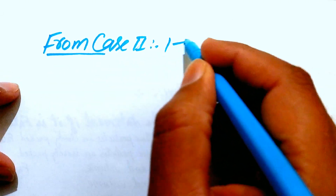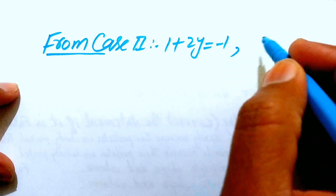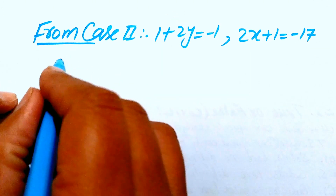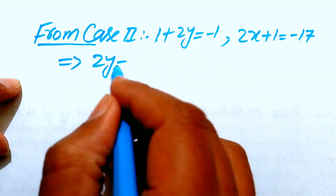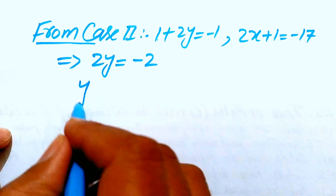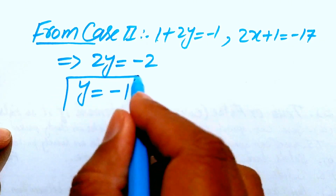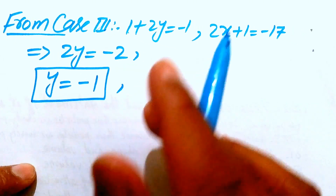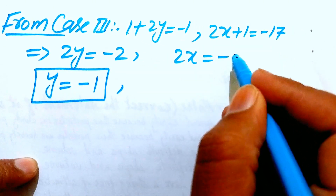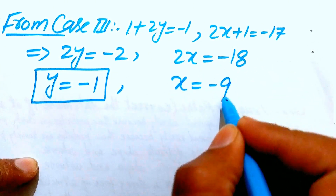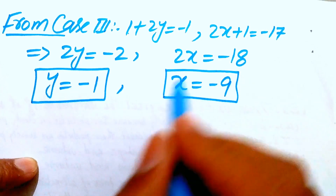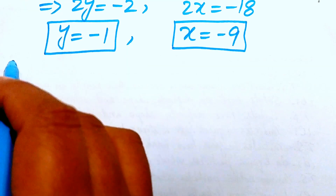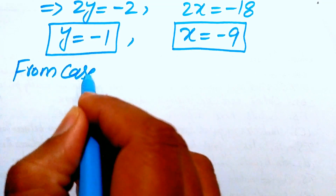Solving Case 3: from (1+2y)=−1, moving 1 to the right gives 2y=−2, so y=−1. From (2x+1)=−17, moving 1 to the right gives 2x=−18, so x=−9. In Case 3, x equals −9 and y equals −1.